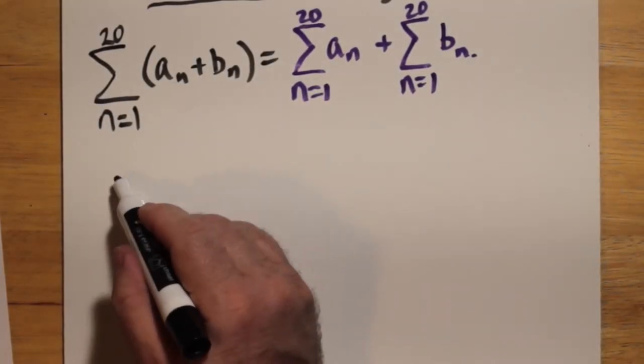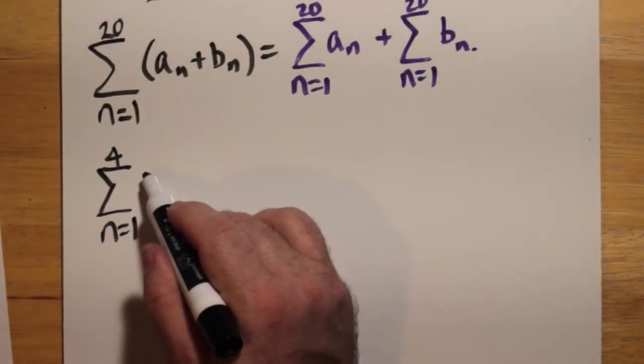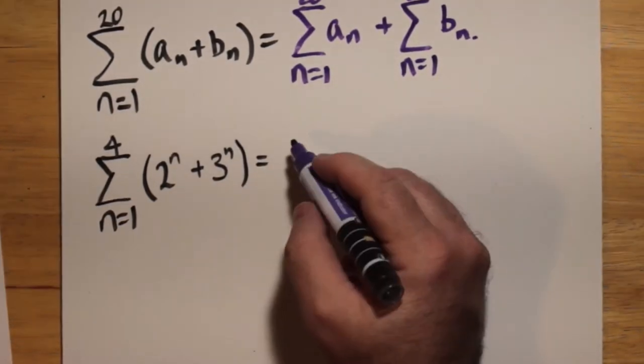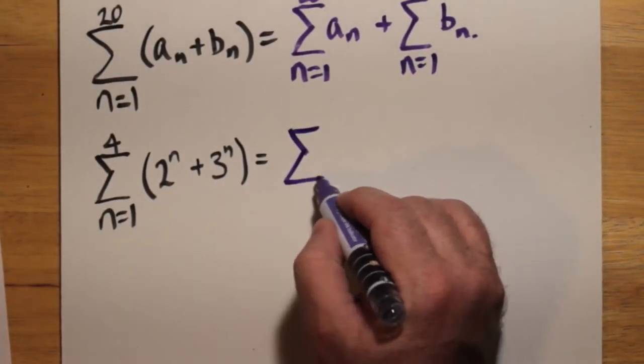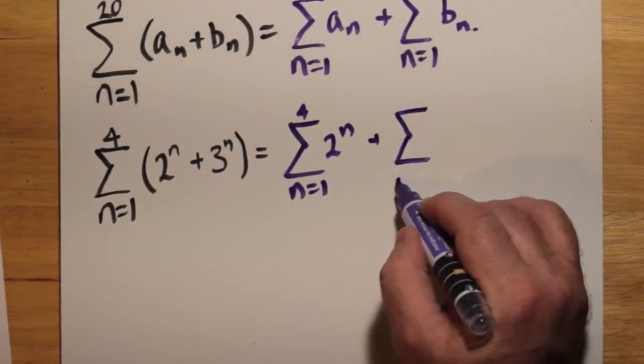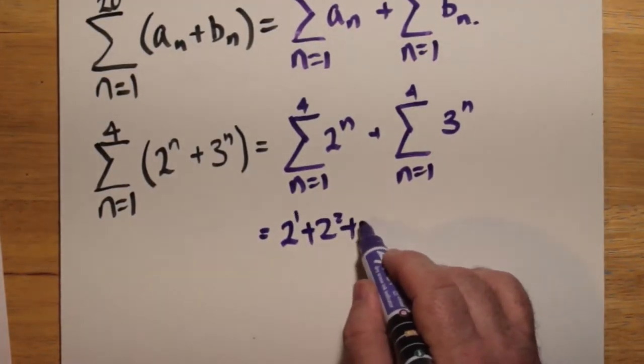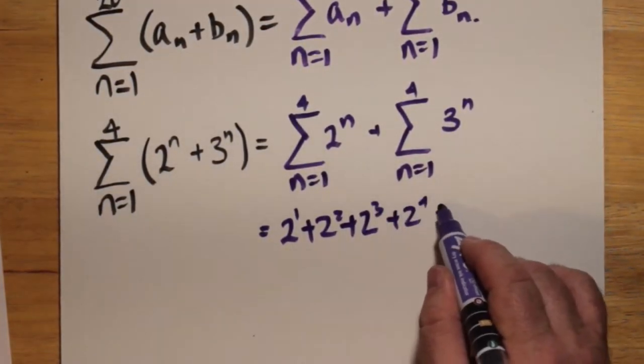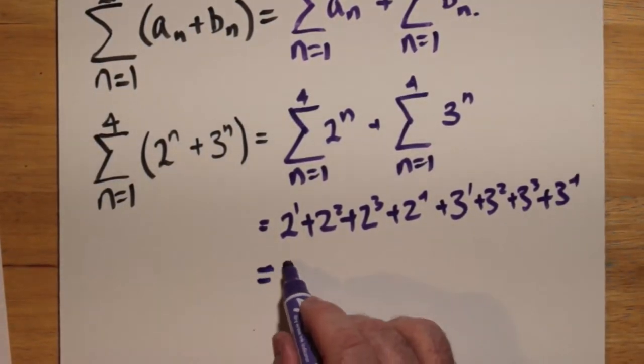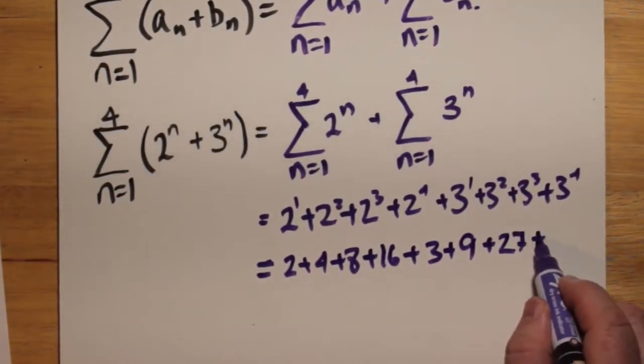For example, let's say that we have n equals 1 to 4 of 2 to the n plus 3 to the n. We can actually break this up into the sum as n goes from 1 to 4 of 2 to the n plus the sum as n goes from 1 to 4 of 3 to the n. And we can expand both and we would get the same sum as if we just did 2 plus 3 to the n in the first place. It's just that the terms are rearranged. But as you can see here, we eventually get to the sum, in this case, 150.